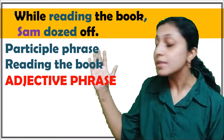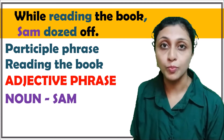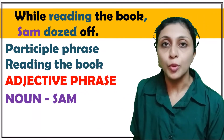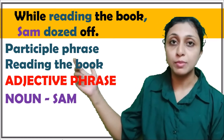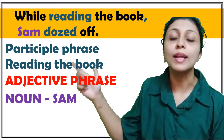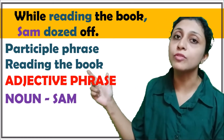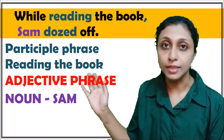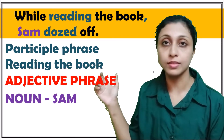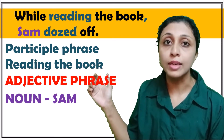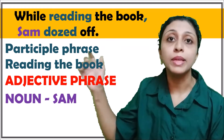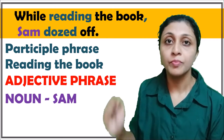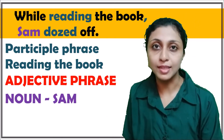It is called an adjective phrase because it describes Sam, who is a noun. We know that Sam was reading the book, so this participle phrase modifies the noun Sam. There is a clear link between the two parts of the sentence, so this sentence is grammatically correct.